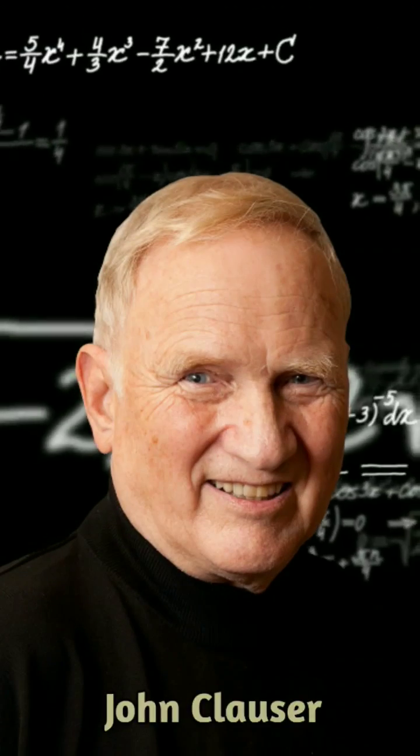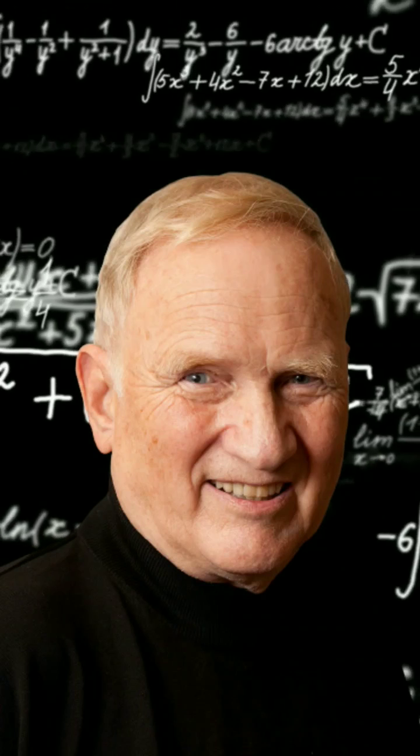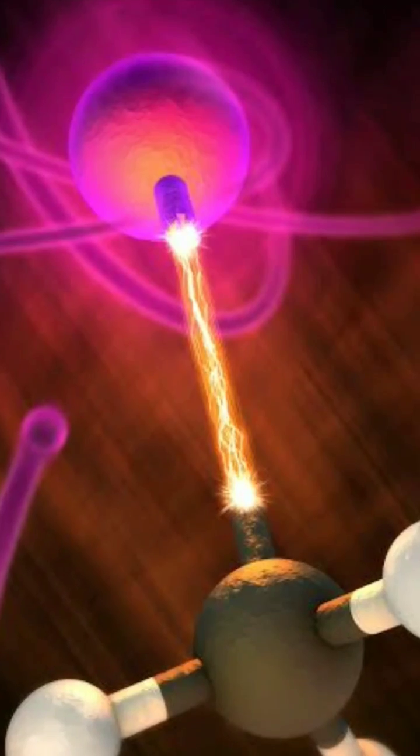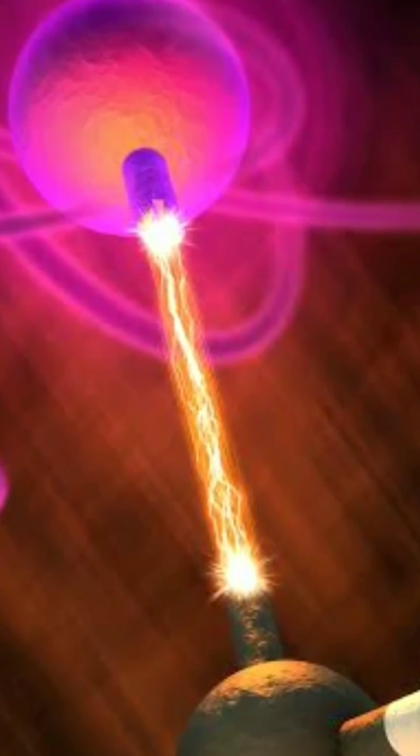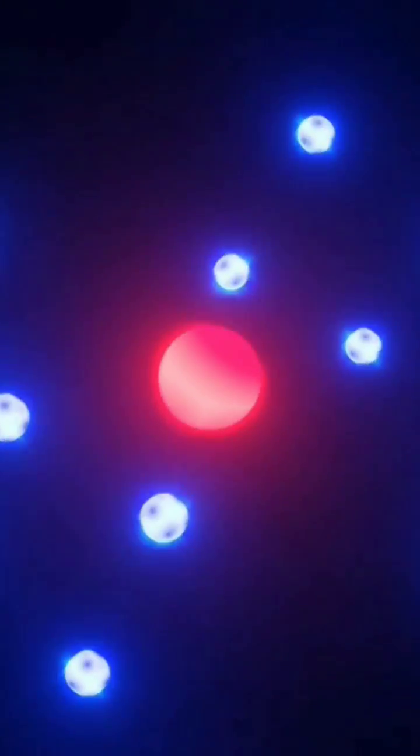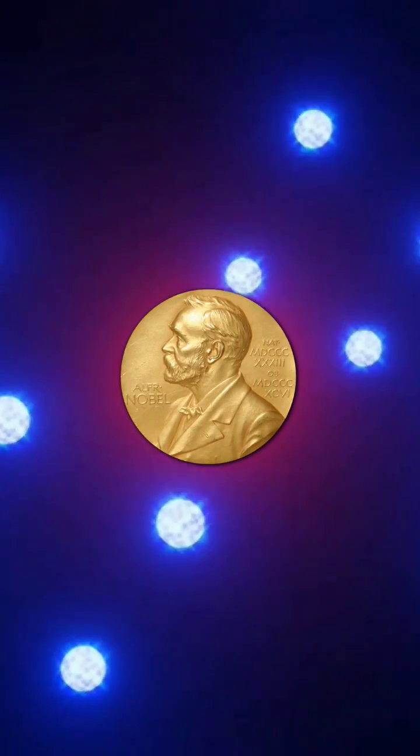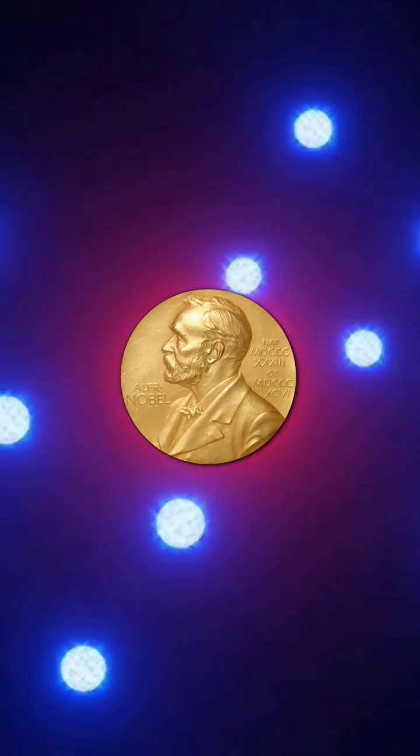John Clauser was a pioneer. Through his experiments, he has proven that quantum entanglement is a real phenomenon, and particles really communicate instantly between vast distances. He along with other two physicists were awarded this year's Nobel Prize for their groundbreaking contribution in quantum mechanics.